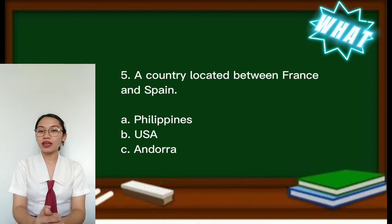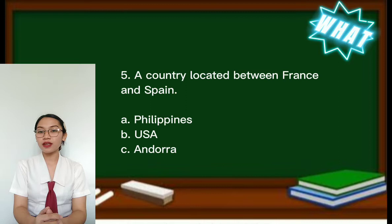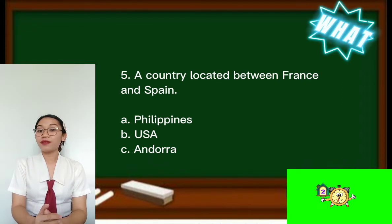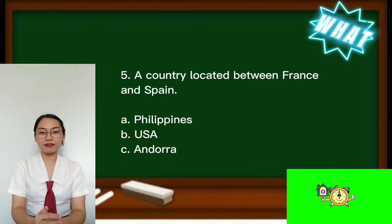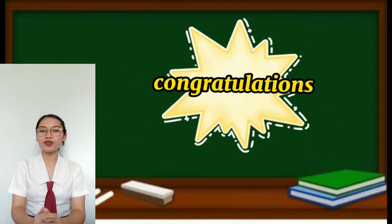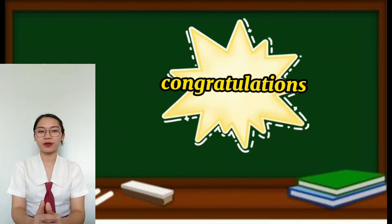Number 5. A country located between France and Spain. A. Philippines, B. USA, C. Andorra. So if you pick the letter C, you nailed it! You got the right answer! Congratulations to those who got the perfect score!